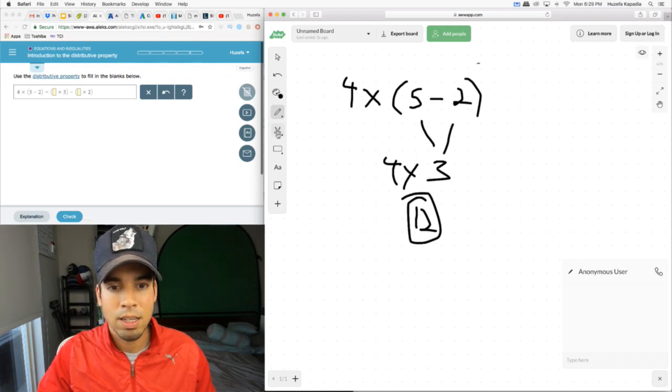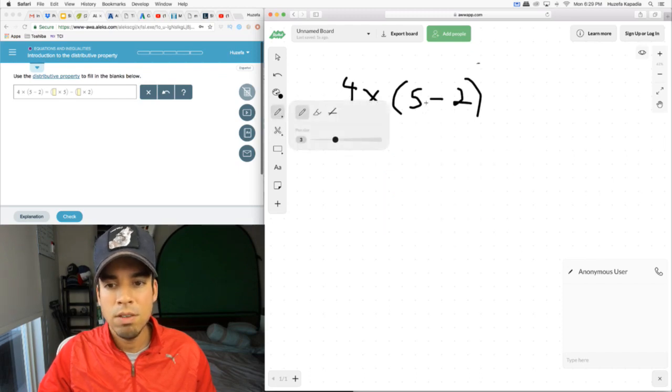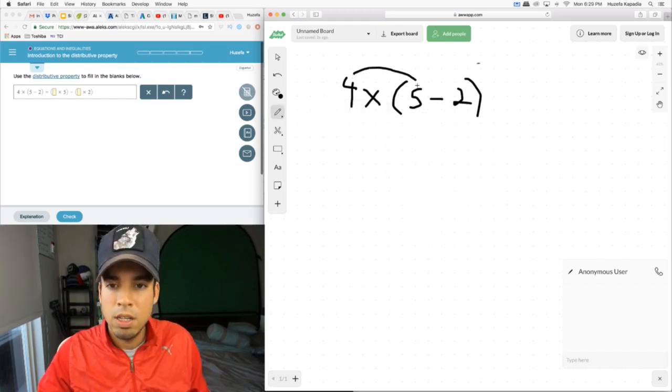The distributive property says that instead of evaluating this first, we can do something different. We can let the 4 jump over and hit the 5 and hit that negative 2 and become 20.